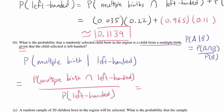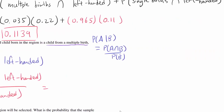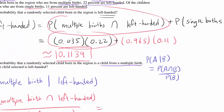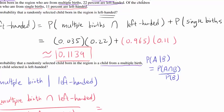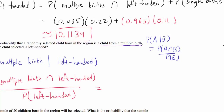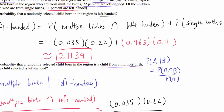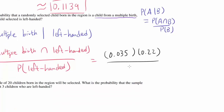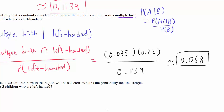So we write this as the probability of having multiple births and being left-handed, divided by the probability of being left-handed. We know both of these. The numerator — probability of multiple births and left-handed — is 0.035 times 0.22. We divide by the probability of being left-handed, which is 0.1139. This gives approximately 0.068. That's the answer to Part B.